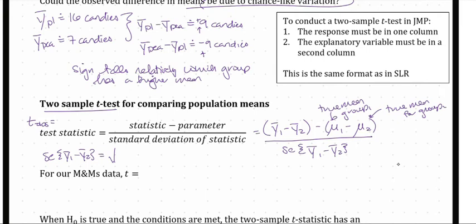The standard error of Ȳ₁-bar minus Ȳ₂-bar is the variability of the first group mean plus the variability of the second group mean. If we were only dealing with Ȳ₁-bar, we would just have S₁ over the square root of N₁. But because we have two groups, we have to add both groups' variabilities, since they both contribute to the overall variability of the difference. That gives us this overall standard error.